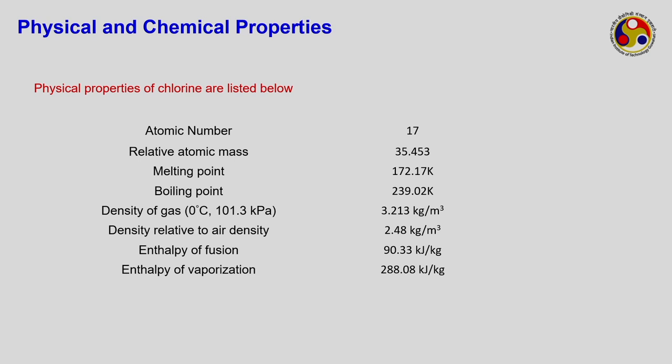Let us first look at the physical and chemical properties of chlorine. The atomic number, atomic mass, melting point (below 0°C), and boiling point are listed. At room temperature it exists as a gas, but can be pressurized into a liquid. The density of the gas at 0°C and 1 atmosphere is given, with a density relative to air of 2.48 kg/m³. Enthalpy of fusion and enthalpy of vaporization data are also provided.